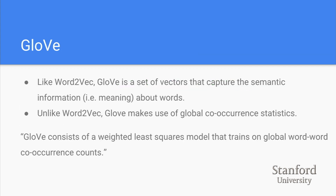GloVe is another famous set of word vectors. Like Word2Vec, it captures semantic information about words, but unlike Word2Vec, it also takes into account co-occurrence statistics. GloVe consists of a weighted least-squares model that trains on global word-word co-occurrence counts. Consider a corpus of three sentences: 'I like deep learning', 'I like NLP', and 'I enjoy flying'. We build an N×N co-occurrence matrix X where X_ij represents the number of times word j occurs in the context of word i.